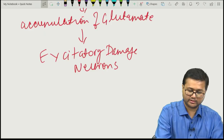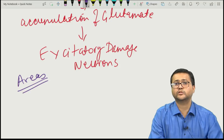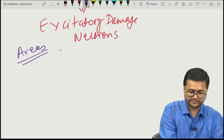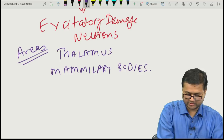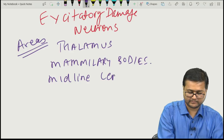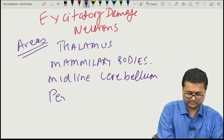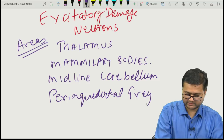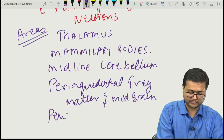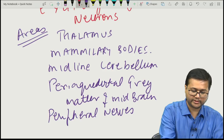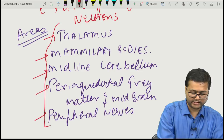Important areas of the brain affected in Wernicke's encephalopathy include the thalamus, mammillary bodies, midline cerebellum, periaqueductal grey matter of the midbrain, and peripheral nerves. These are important areas to remember.